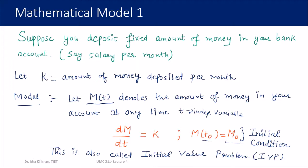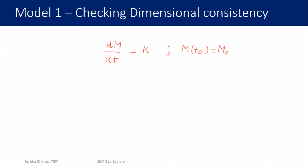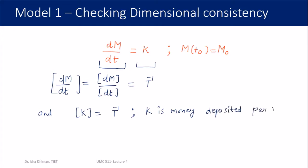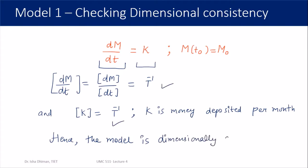Now we need to check whether the model is dimensionally consistent. The dimension of dM/dt equals dimension of dM divided by dimension of dt. Money has no dimension, so dM/dt has dimension T⁻¹. Similarly, k is money deposited per unit time, so its dimension is also T⁻¹. Both sides match, so our model is dimensionally consistent — an essential step whenever formulating a mathematical model.